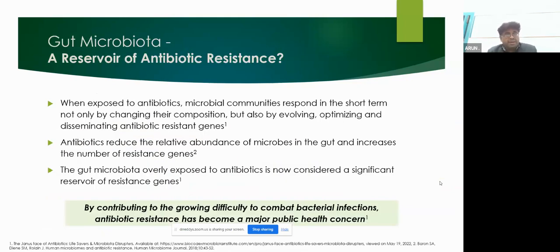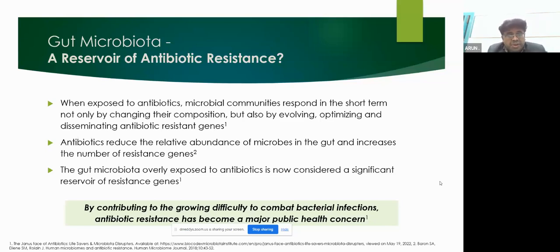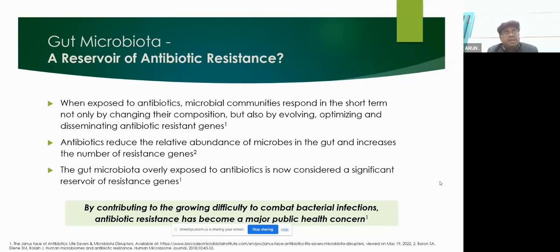When exposed to antibiotics, the gut microbiota responds not only by changing composition but also by evolving, optimizing, and disseminating antibiotic-resistant genes. Antibiotics reduce the relative abundance of microbes in your gut and increase the number of resistant genes. The gut microbiota overly exposed to antibiotics is now considered a significant reservoir for resistant genes, contributing to the growing difficulty in combating bacterial infections. Antibiotic resistance has become a major public health concern.